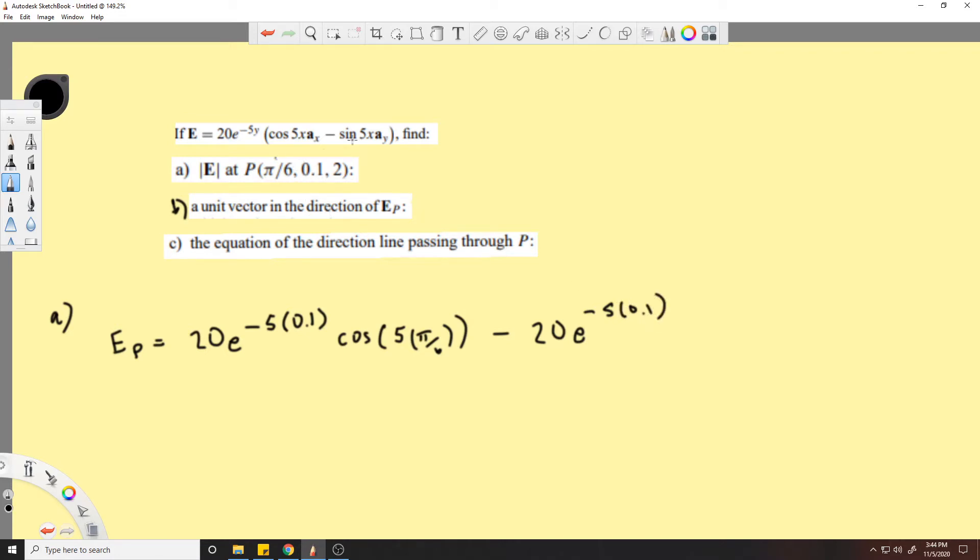X is pi/6, so it's 5π/6 minus 20 e^(-5*0.1), plugging in y again because there's a y right here. I just distributed this here and there.